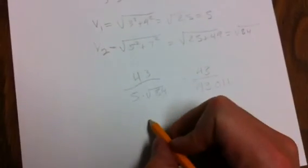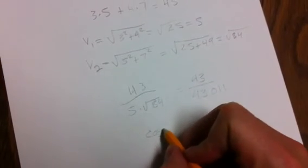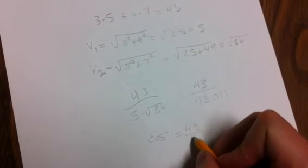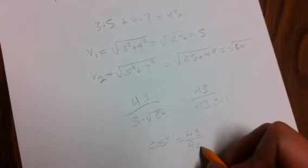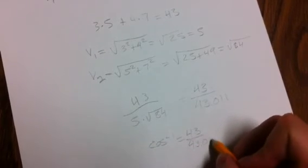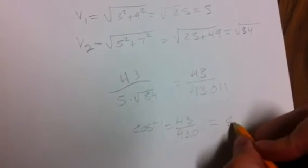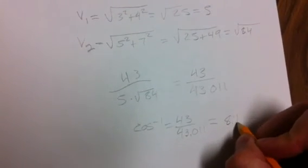Okay, when we take the inverse cosine of this ratio, we get theta, and theta is going to be equal to 8.10.